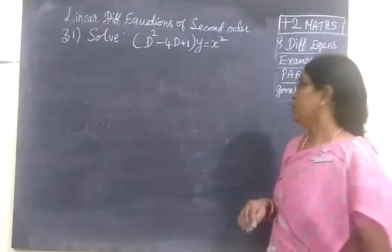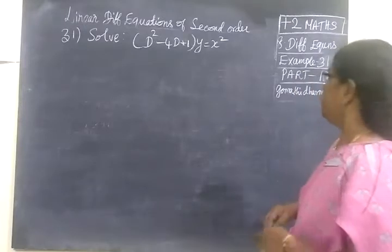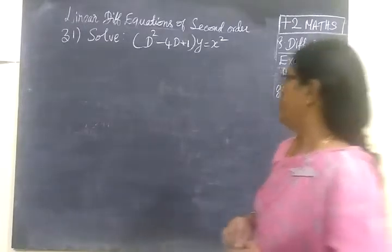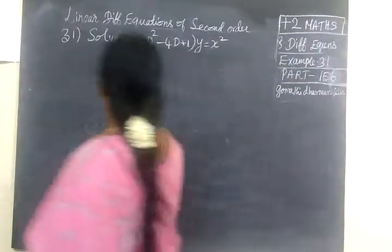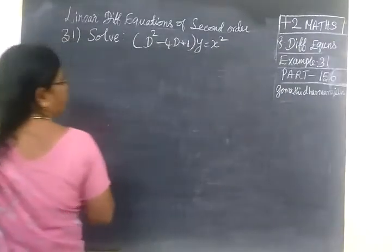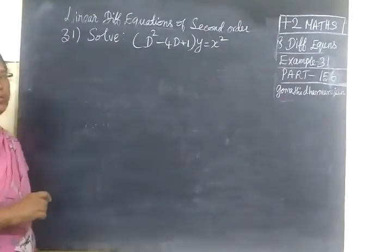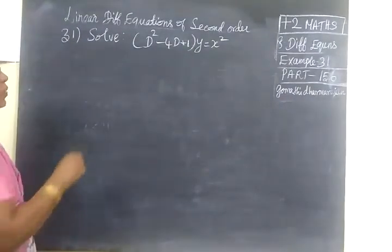Now we see Example 31, part 156: solve P squared minus 4P plus 1.